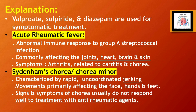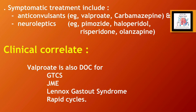Valproate, sulpiride, and diazepam are used for symptomatic treatment. Acute rheumatic fever is an abnormal immune response to group A streptococcal infection, commonly affecting the joints, heart, brain, and skin. Sydenham's chorea, or chorea minor, is characterized by rapid, uncoordinated, jerking movements, primarily affecting the face, hands, and feet. Signs and symptoms of chorea usually do not respond well to antirheumatic agents; symptomatic treatment includes anticonvulsants and neuroleptics. Valproate is also the drug of choice for GTCS (generalized tonic-clonic seizures), JME (juvenile myoclonic epilepsy), Lennox-Gastaut syndrome, and rapid cycling.